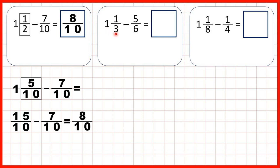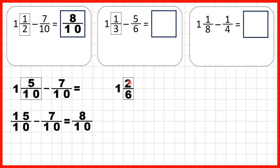We have 1 and 1 third minus 5 sixths. Again, we need the denominators to be the same, so we need to find a fraction equivalent to 1 third which has a denominator of 6. So instead of 1 and 1 third, we can write 1 and 2 sixths. That's equivalent because 3 times 2 is 6, and 1 times 2 is 2.